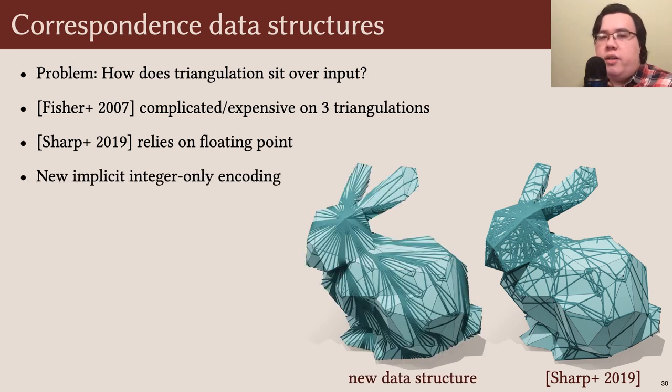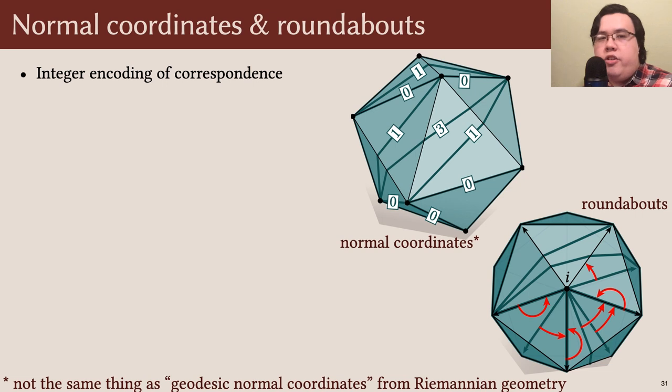We develop a new implicit encoding based only on integer data, which always encodes the correct correspondence. I should note that the fact that we don't have to track all intersections explicitly is thanks again to the hyperbolic picture, as the edges that we track follow hyperbolic geodesics along the input mesh. Our integer encoding is comprised of normal coordinates and what we call roundabouts. It fully determines the geometry of intersections between two triangulations and is easy to update after an edge flip.